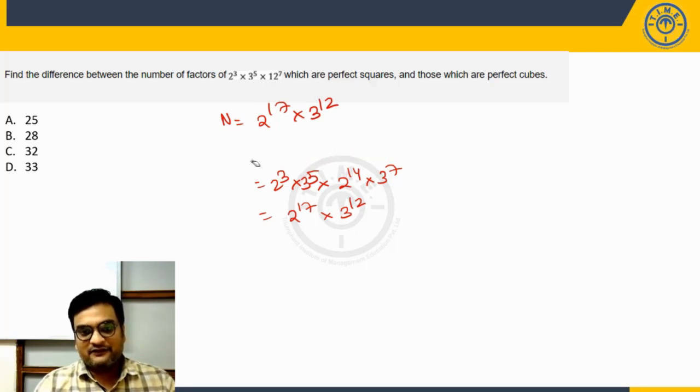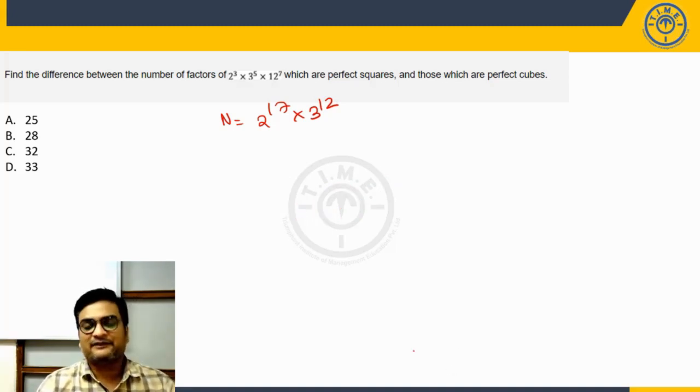Because whenever we are dealing with any concept from factors, prime factorization is essential, that must be there. Now what is he asking us, find the difference between the number of factors of this number which are perfect squares and those which are perfect cubes. So basically we need to find out factors which are perfect squares first.